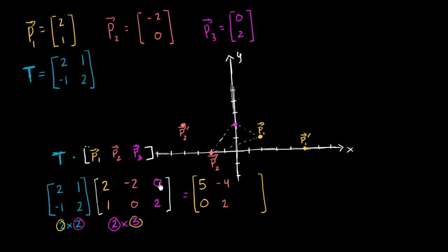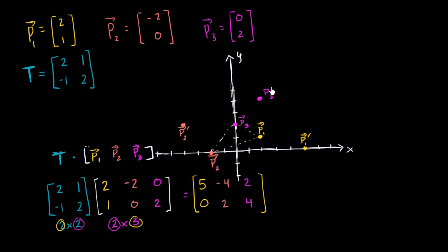And then finally let's look at P3. We have two times zero, which is zero, plus one times two — so that's zero plus two, or just two. Then we have negative one times zero, which is zero, plus two times two is four. So we get the point two comma four. We go right over here. So this is P3 prime.